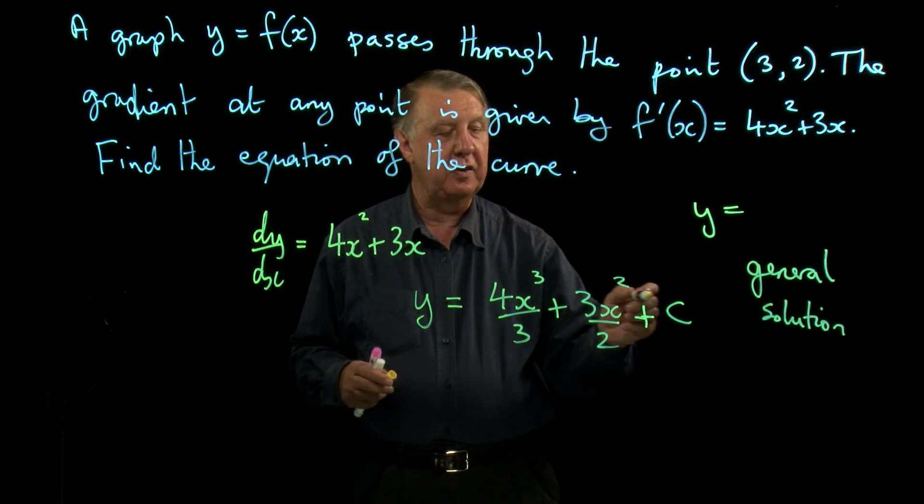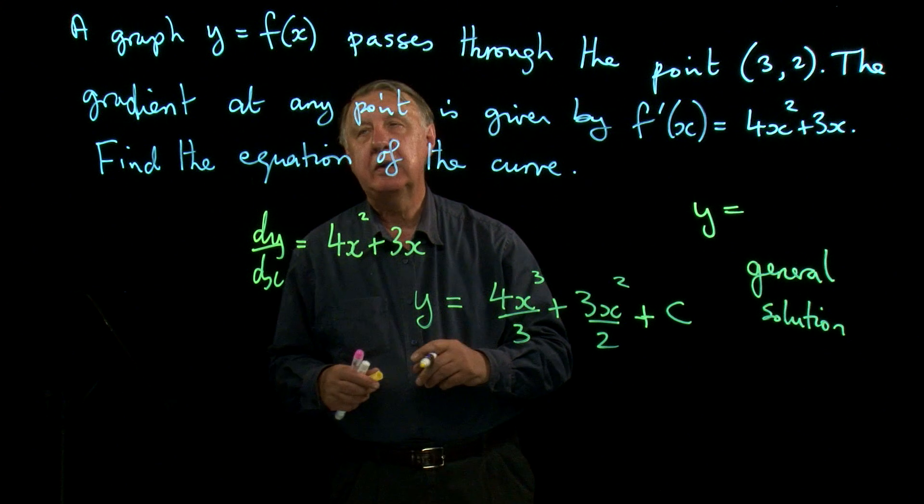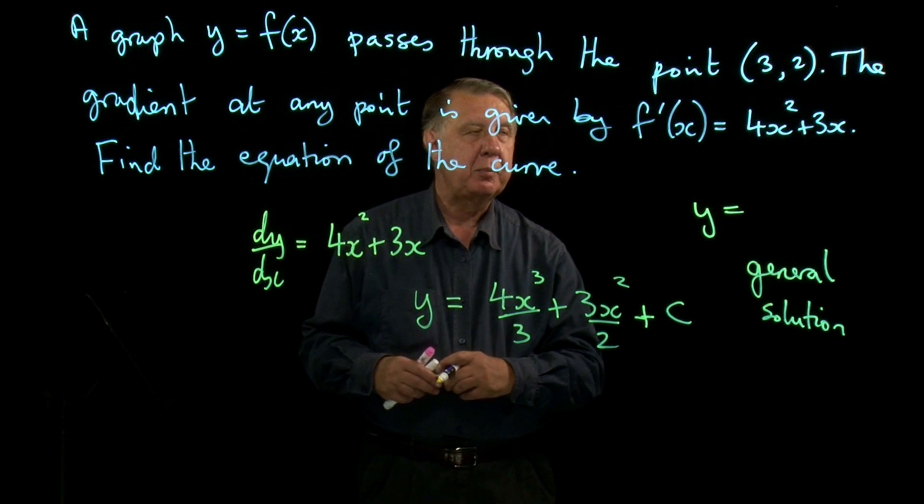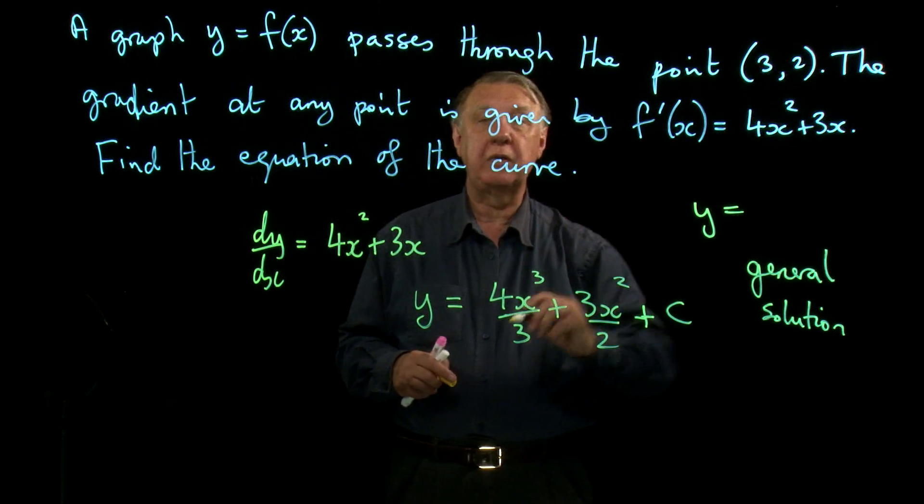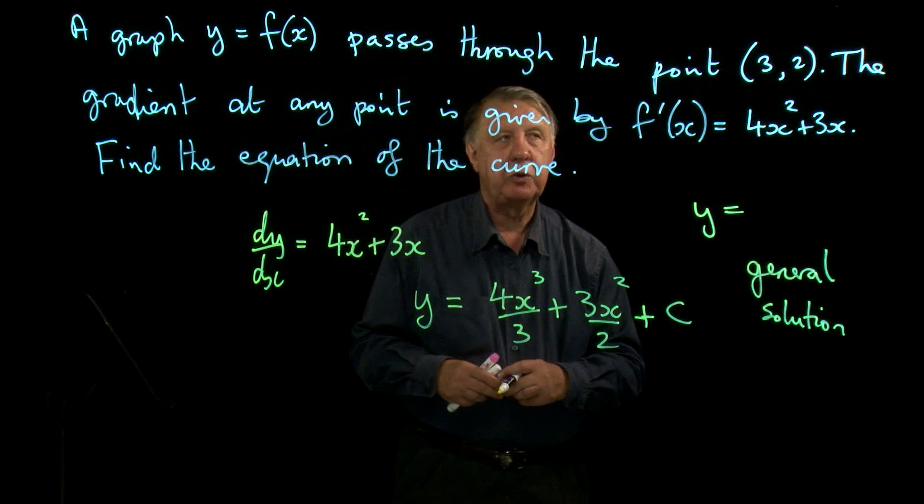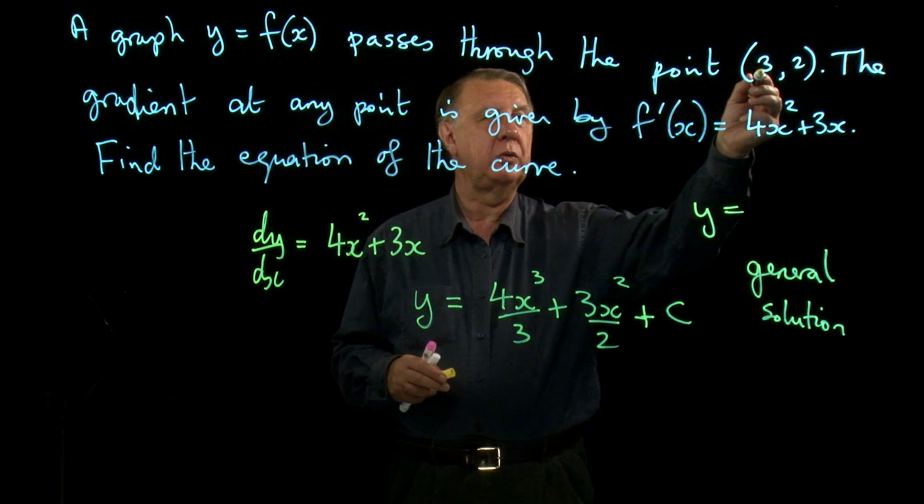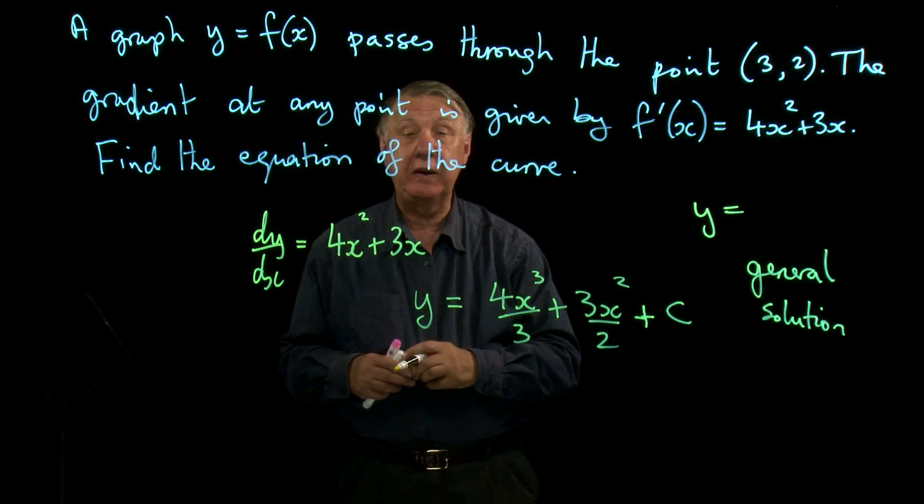This is all the solutions that are possible. This plus c gives us any sort of range of solutions. But I know something specific about my solution. I want it to go through that point there. Which means that if I substitute x equals 3, I've got to come out with y equals 2.